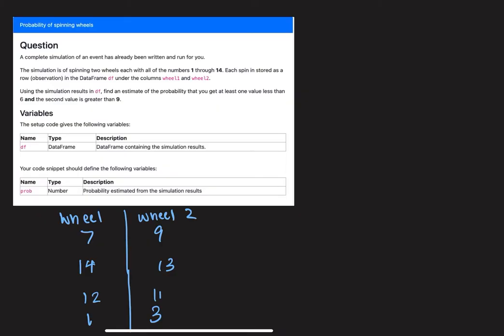The simulation of spinning two wheels, each with all the numbers from 1 through 14, is stored in a data frame called DF under the columns wheel 1 and wheel 2. So using these simulation results from DF, we want to estimate the probability that we get at least one value less than 6 and the second value greater than 9.